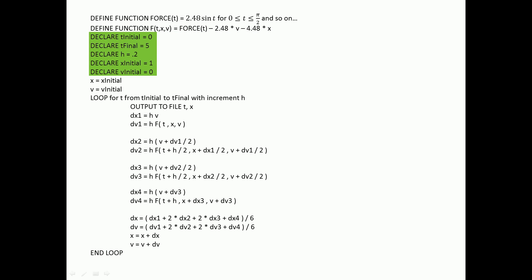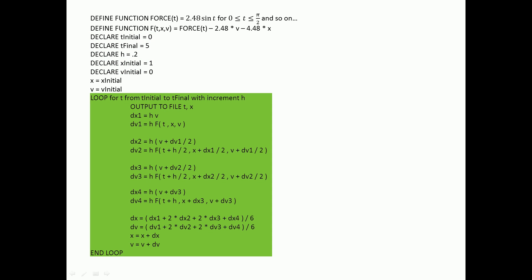Then, we declare all the boundary conditions such as the range of time, the time step, the initial position, and initial velocity. Now, we perform the loop that uses the RK4 method to solve for the changes in x and v over the range of t initial to t final with the time step, h.